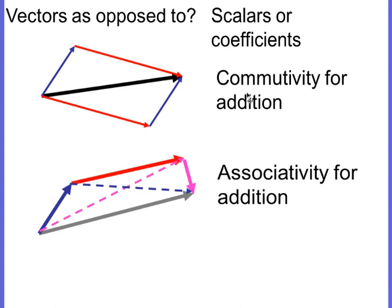So the associating of blue with red or red with magenta does not change the result. Commutativity especially, but both of these are properties that you have to have if you're going to be a vector. Your addition has to be commutative and associative. I will show you an example in class that there are things which seem very vector-like, very sized and directional, but the order in which you add them changes the result. So we say they are not vectors because they do not have commutativity.